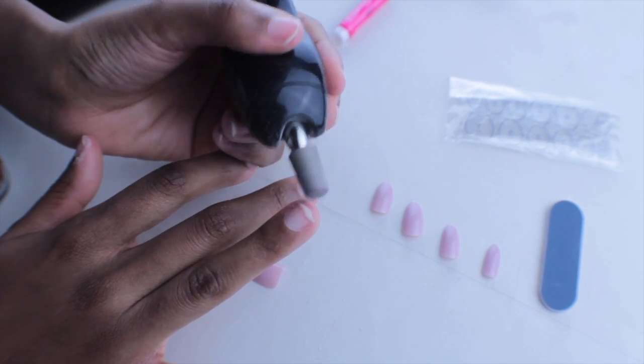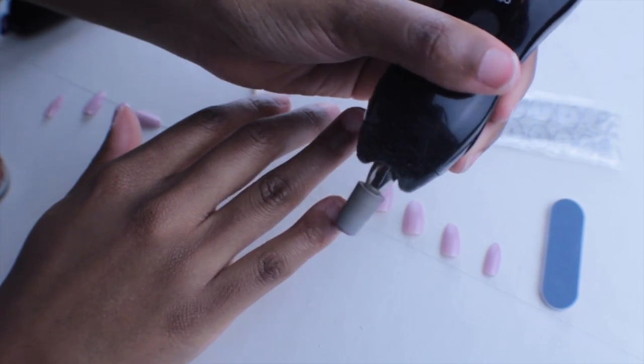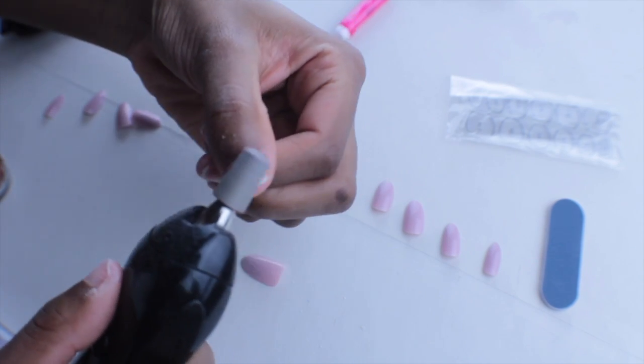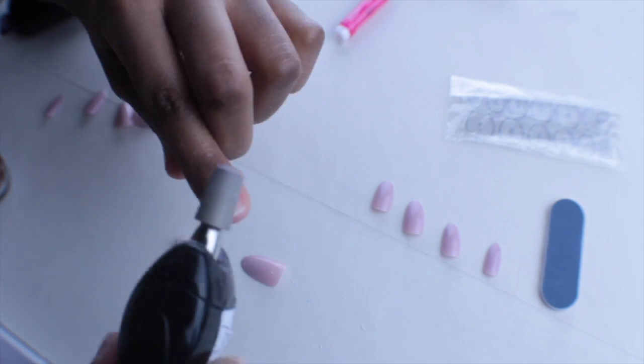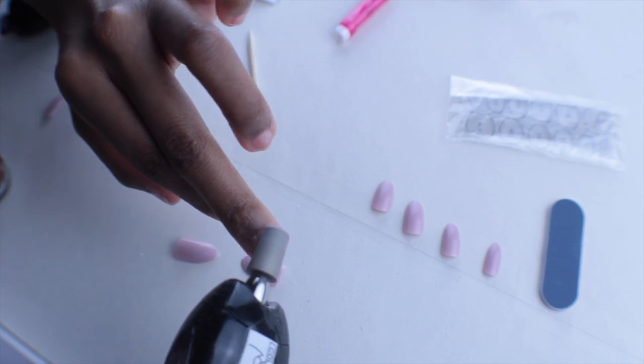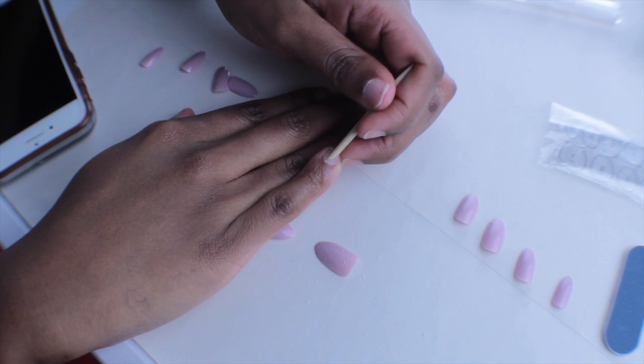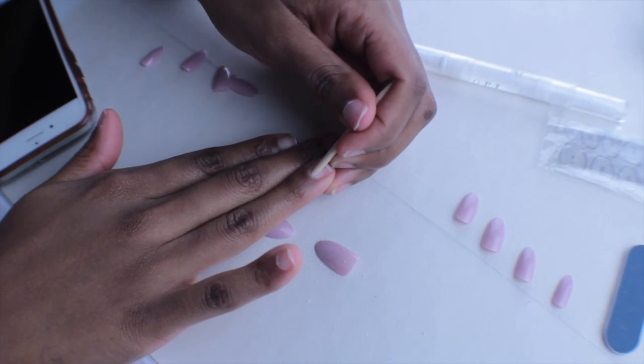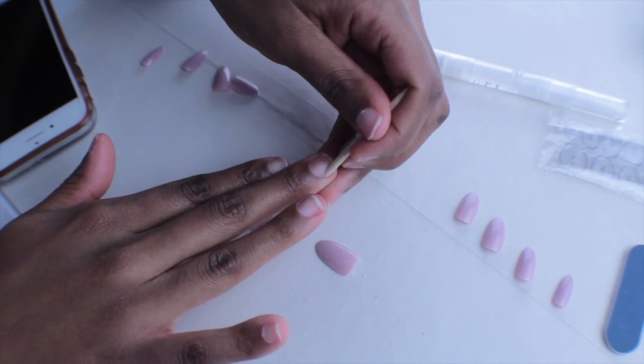I'm not really doing a lot with the nail drill as you'll probably see in this video, but I'm just gonna go through and get rid of any of the shine on the nail bed. Now I'm going to move on and use the cuticle stick to push my cuticles back.